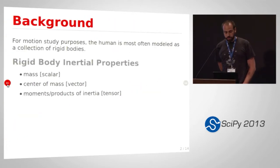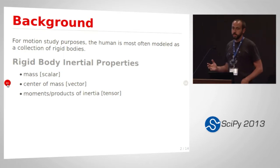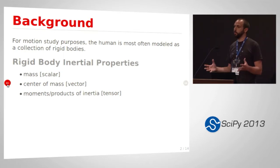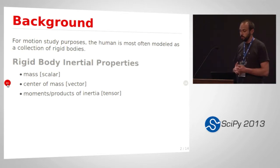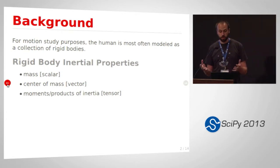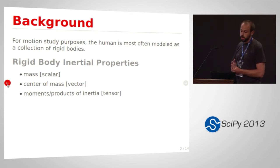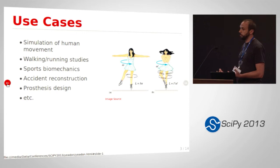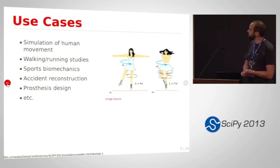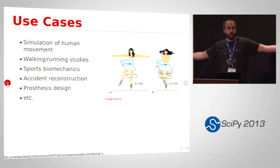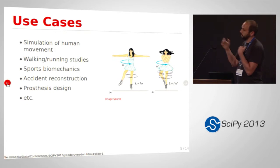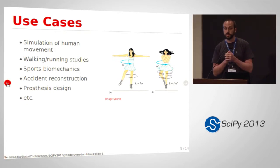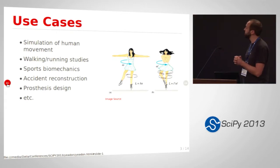As background, for many motion studies like walking or sports biomechanics — anytime you want to understand how a person is moving in space — if you want to properly complete Newton's second law and Euler's equation, you have to have an idea of the mass, center of mass, and moments and products of inertia of the human's body segment parameters. Treating human body segments as rigid bodies is exceptionally accurate for many studies. A common example is the spinning ice skater: when she has her arms out she has a high moment of inertia, and when she pulls her arms in, conservation of angular momentum says she's going to spin faster. So what is her moment of inertia? That's the question you really want to know.